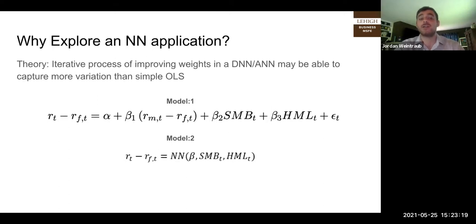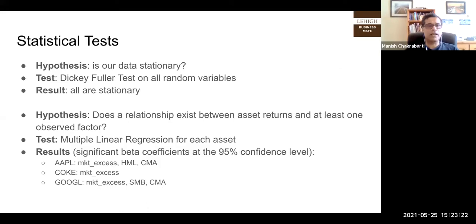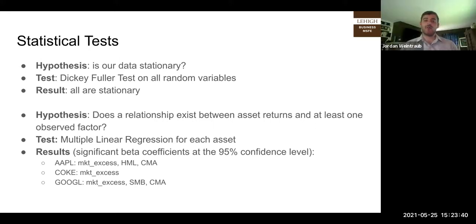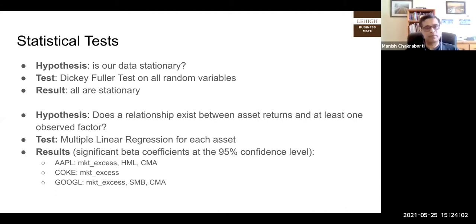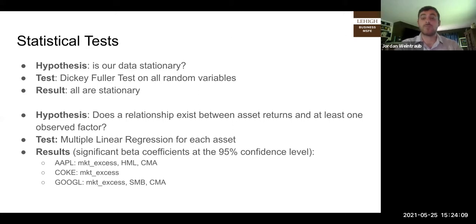Professor: Financial data is notoriously non-stationary and you have to do all kinds of transformations to work with that data. So I'm a little surprised you found all the data stationary. Student: I should have clarified. Originally it was most definitely not stationary on the test results. But in Fama-French regression, once you convert returns to logarithmic returns to account for continuous compounding, it was then found to be stationary. Professor: Got it. It's probably mentioned in the report? Student: Yes, we definitely mentioned logarithmic returns in the report.